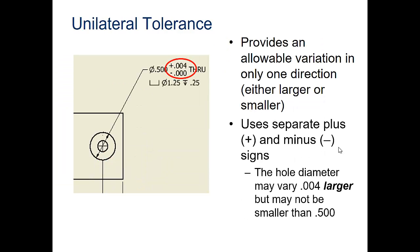The unilateral tolerance provides an allowable variation in only one direction, either larger or smaller. For this example, it is only allowed to be larger, not smaller. They use separate plus and minus signs. The hole diameter may vary .004 larger but may not be smaller than .5.